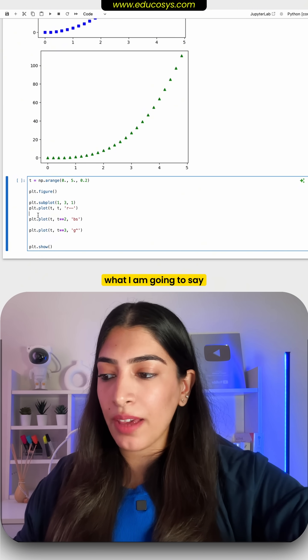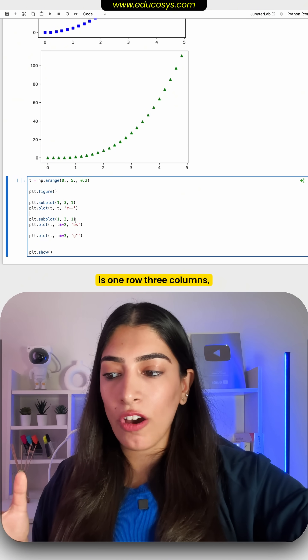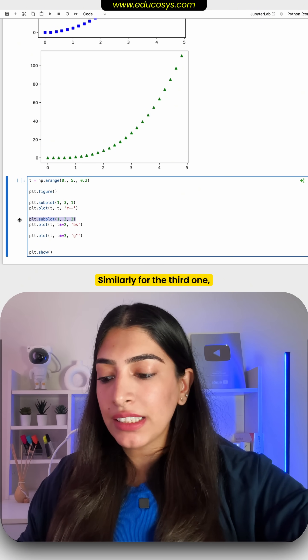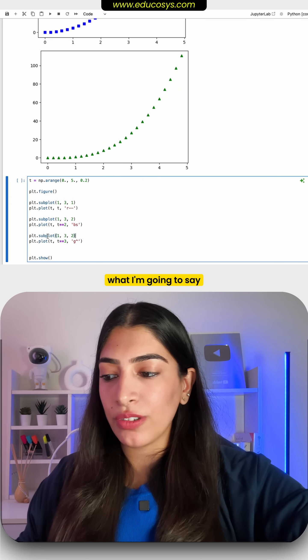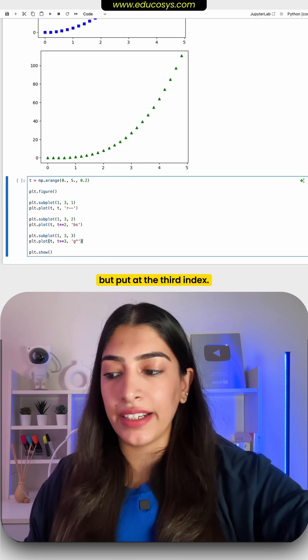Now similarly for the second what I am going to say is one row three columns but put this one at the second index. Similarly for the third one what I am going to say is one row three columns but put at the third index.